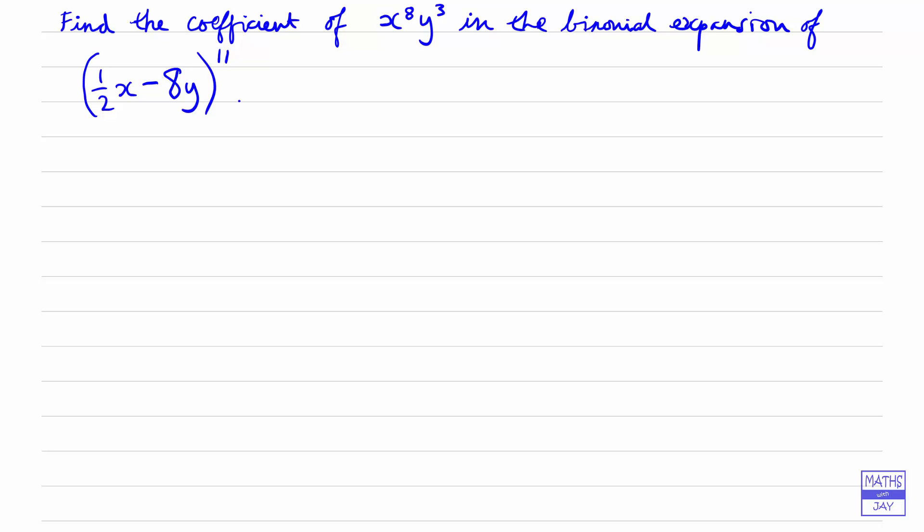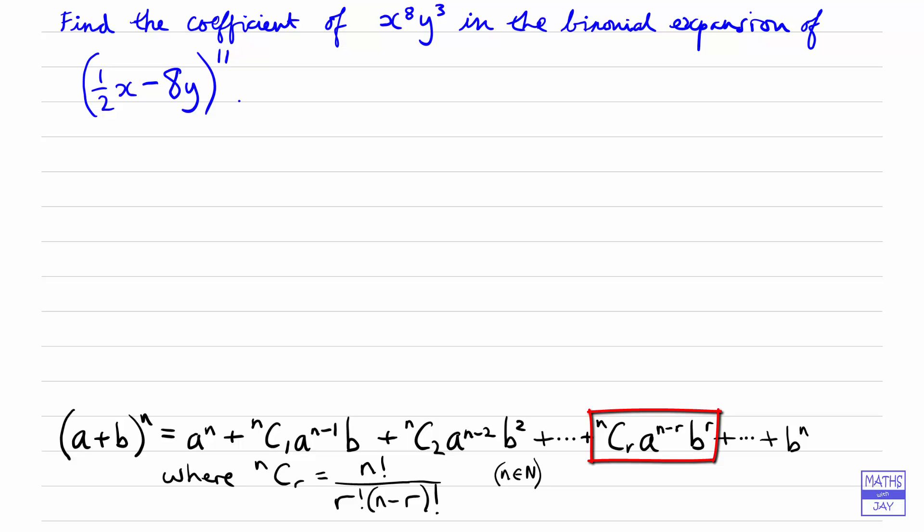So what we need to start with is the general binomial series expansion. The important thing here is the general term. So we're looking for nCr times a to the n minus r times b to the r.